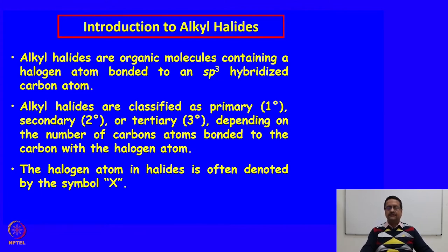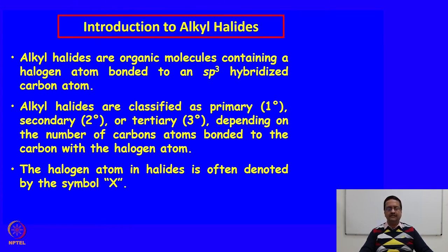When we try to understand different types of reaction mechanisms, we are always interested to know about the substrates and reactants involved in a given reaction. These substitution reactions, essentially called SN1 or SN2 reactions, involve compounds called alkyl, aryl, or acyl halides. Alkyl halides are organic molecules containing a halogen atom bonded to an sp3 hybridized carbon atom. They are classified as primary (1°), secondary (2°), or tertiary (3°), depending on the number of carbon atoms bonded to the carbon bearing the halogen atom.